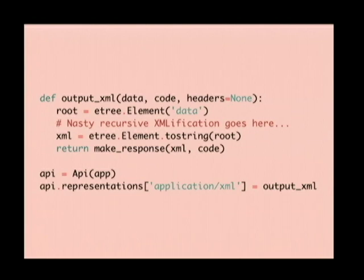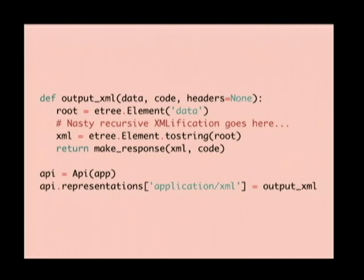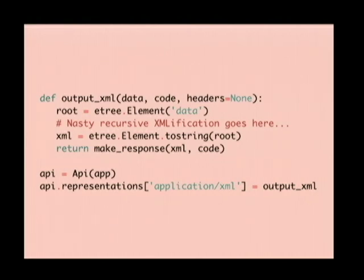To counteract this, we made it really easy to add new representations. The API class already comes with logic to do content negotiation based on content-type headers. All you have to do is define a function that takes the marshal dictionary structure, the code, and the headers — you're basically re-implementing Flask's make_response with some extra logic. I left out the page or so of code you'd need to actually turn a Python dict into an XML tree, but you can find it on Stack Overflow — just copy and paste. You create the ElementTree root, fill it in, run tostring on it, and then call make_response. Once done, you construct your API as usual and stick your function into the representations dictionary on the API object under the application/xml MIME type.